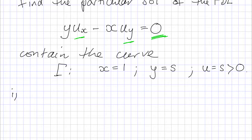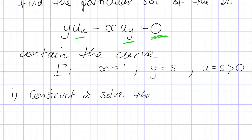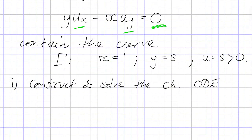To understand these truncated first-order PDEs, the key is to look at the characteristics. So the first thing we'd like to do is construct and solve the characteristic ODE. There's a little bit of pattern matching: comparing with the general form of our truncated PDE, whatever is in front of du/dx we call a. So here we can identify that a is equal to y.